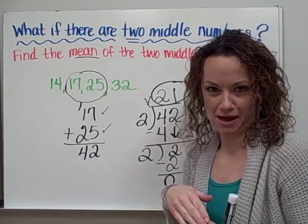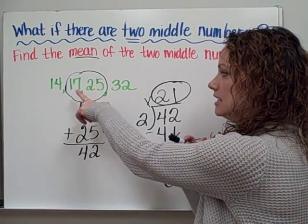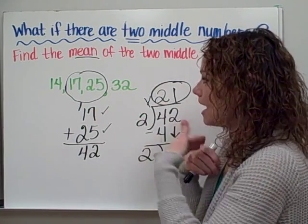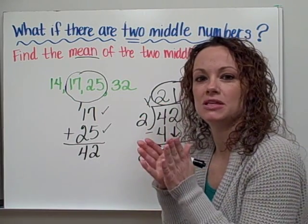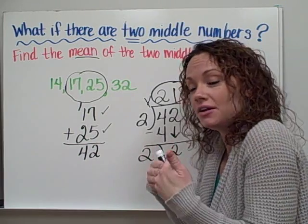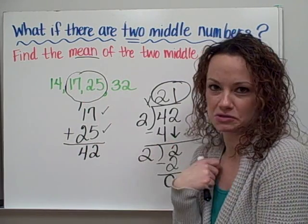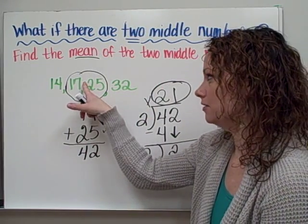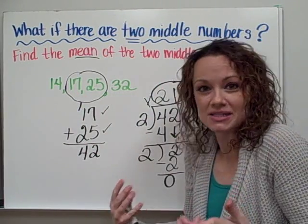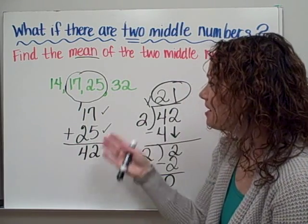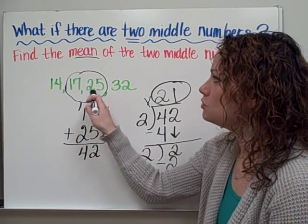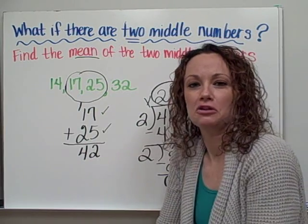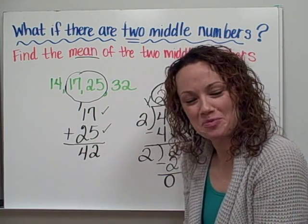And if you think about it, if you look at the numbers 17 and 25 on a number line, 21 actually falls right in between — right in the middle of those two numbers. So you are searching for a number that is in the middle of your two middle numbers, and you do that by finding the mean. This is only if you do have two middle numbers; otherwise you'll just go with the one singular number that is in the middle, like our first example.